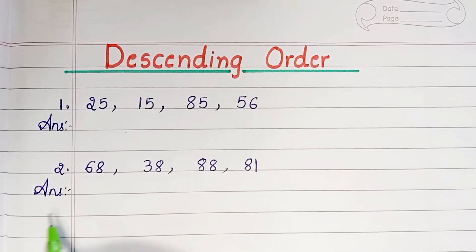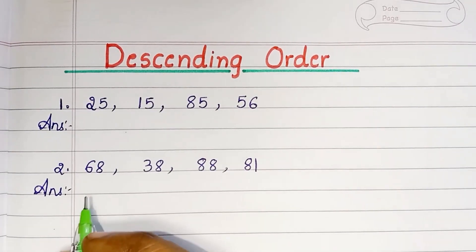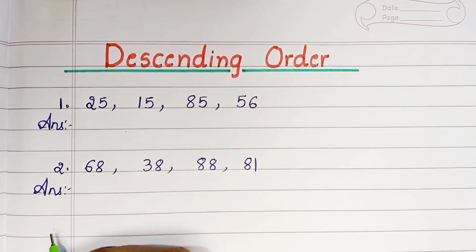Descending order means arranging from largest to smallest value.